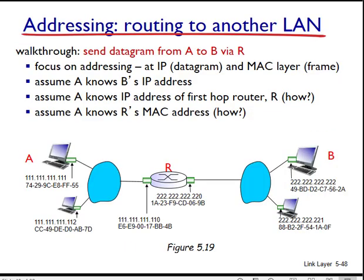It should now be clear how ARP operates when a host wants to send a datagram to another host on the same subnet. But now let's look at a more complicated situation when a host on one subnet wants to send a network layer datagram to a host on another subnet.